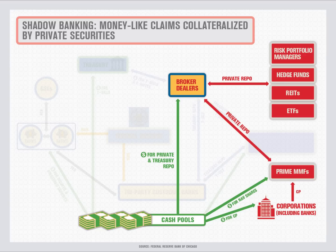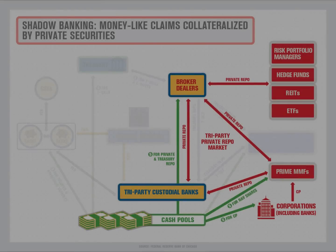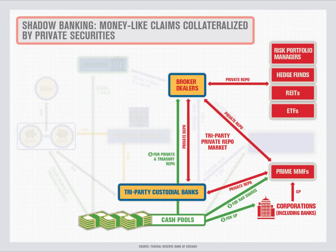To obtain short-term funding, broker-dealers then re-pledge the acquired riskier collateral to prime money market funds that want money-like claims collateralized by private securities. Despite the riskier collateral, these private repos are close substitutes to money-like claims because they are overnight investments with larger haircuts than treasury repos. With a big enough haircut, securities such as government agency mortgage-backed securities, private MBS, asset-backed securities, corporate bonds, or even equities can be transformed into assets viewed as safe overnight investments. Collectively, private repos make up a large portion of private money-like claims, and many take place in the tri-party system.